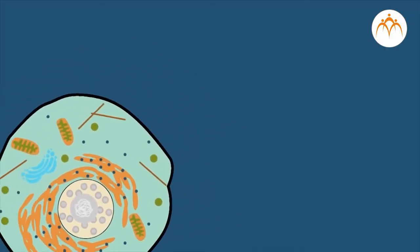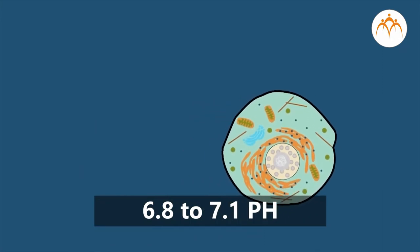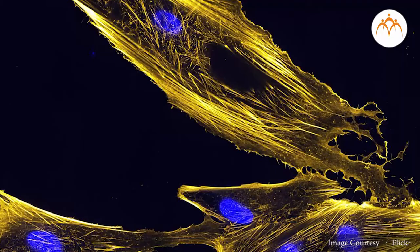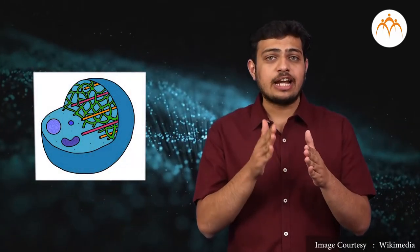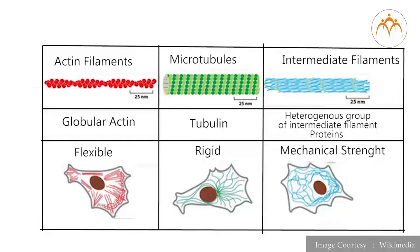Usually, the matrix pH is around neutrality, about pH 6.8 to 7.1. The cytoskeleton of the cell is also part of the cytoplasm. The cytoskeleton acts to organize and maintain the cell's shape and anchors organelles in place. The eukaryotic cytoskeleton is composed of microfilaments, intermediate filaments, and microtubules.